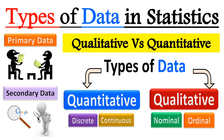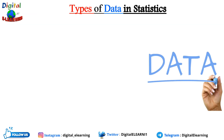Have you ever wondered about the data that is all around us — what it is and how it is used to make big decisions in all sorts of different areas, from business to science and government? What exactly is this data and how can you classify it? In this video, we're going to talk about two different types of data: qualitative data and quantitative data. Whether you are a student, a working professional, or someone curious about the world of data, this video will provide you all that you need to know.